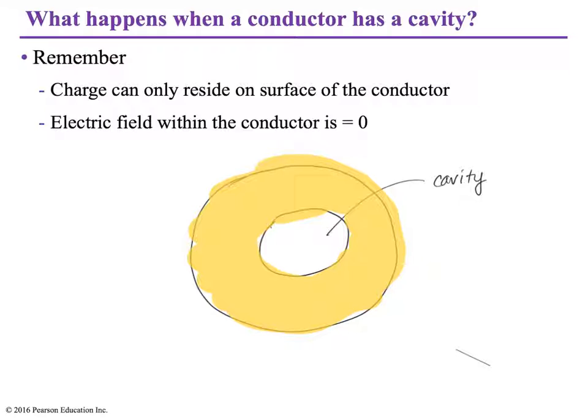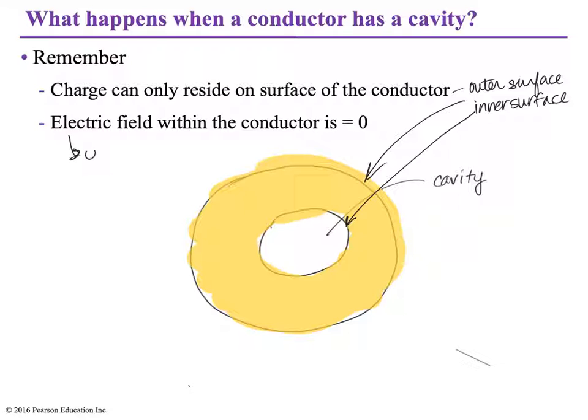So, the things that we want to remember is that the charge can only be on the surface of the conductor, and in this case, when we have a cavity, there's an outer surface, and that's this right here, or an inner surface. And that's right there. And the electric field within the conductor is zero. In this picture, this means in the yellow area. That's where the electric field is going to be zero.